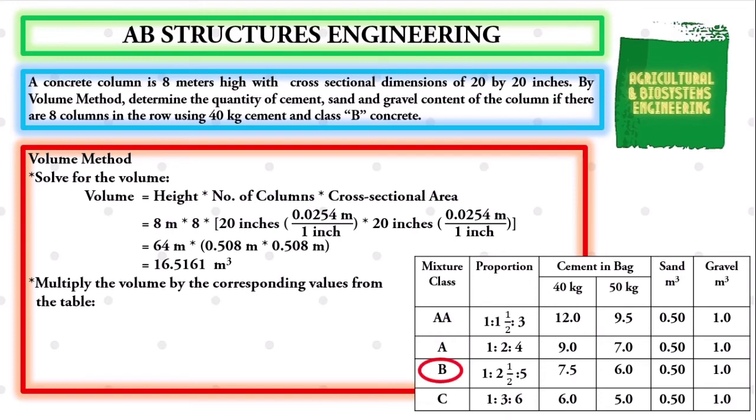In the problem, it requires that we have to use the class B mixture under 40 kg cement. The encircled values are what we will be using to compute for the quantity of our materials.